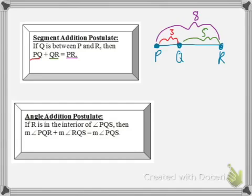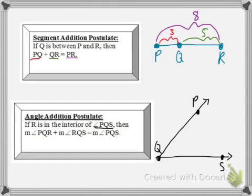So, the angle addition postulate works pretty much the same way. Consider this situation where we've got an angle, we're talking about angle PQS here. It says that R is in the interior of angle PQS. So, I'll put R right here. By drawing in that extra ray, we have now created multiple angles.